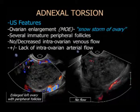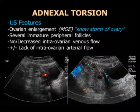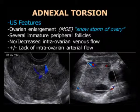Las características ecográficas incluyen el agrandamiento ovárico masivo (MOE): el aspecto de tormenta de nieve, con zonas de licuefacción e hipoecoicidad, que va empujando los folículos hacia la periferia. Veremos folículos periféricos en la pared del ovario, con ausencia o poco flujo venoso y flujo arterial variable. Otra paciente también con agrandamiento masivo, MOE, empujando los folículos sin flujo en el ovario que sufre la torsión. Cuando vemos esto, sabemos exactamente cómo diagnosticar este cuadro.